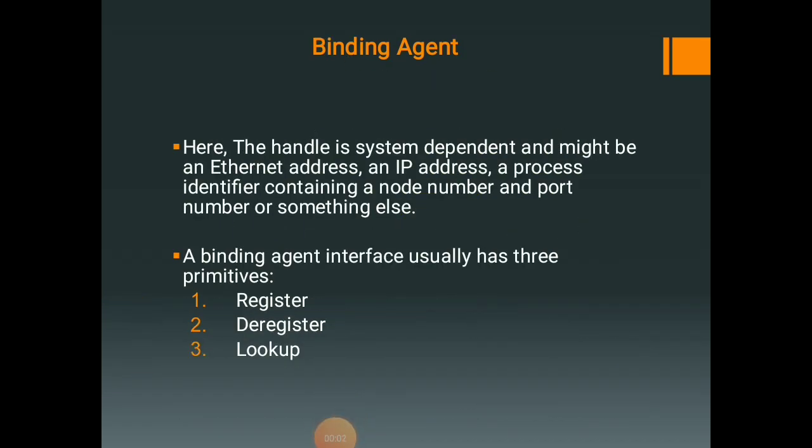The handle is system dependent and might be an Ethernet address, an IP address, a process identifier containing a node number and a port number, or something else. The handle is used to register a server with the binding agent. A binding agent interface usually has three primitives: register, deregister, and lookup. Register is used by a server to register itself with the binding agent. Deregister is used by a server to deregister itself from the binding agent. Lookup is used by a client to locate a server.